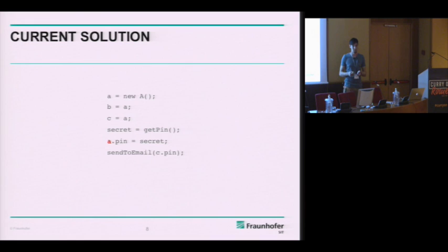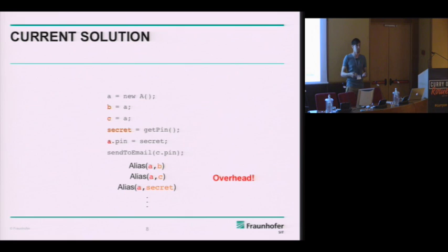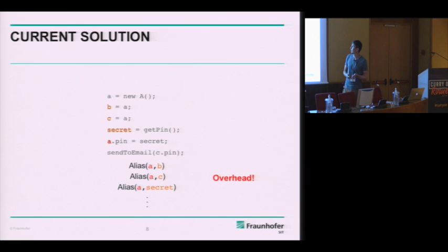So what is the current solution to this problem? Currently you can iterate over all local variables and ask if they alias. If you have a points-to alias analysis, you have to iterate over all variables A, B, and C, and then also ask if A aliases secret. This is a serious overhead because in demand-driven analysis, you want to reduce the number of queries and don't want to iterate over all local variables to trigger new queries all the time.